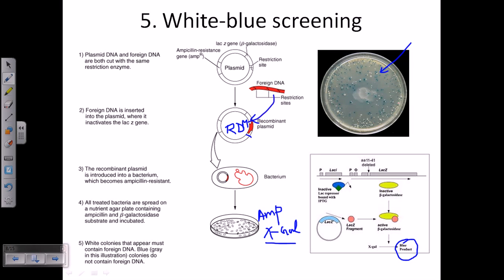So the colonies which are white in color is telling us that those colonies consist of the plasmid or the vector which does not have any incorporation of the foreign DNA. OK, so from this screening we can look for...